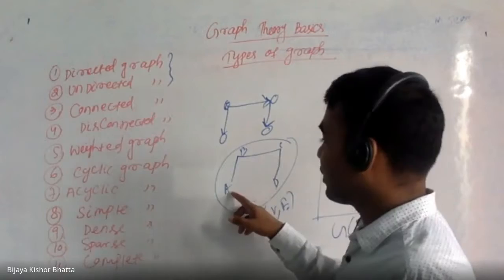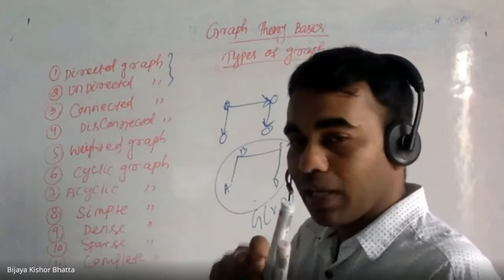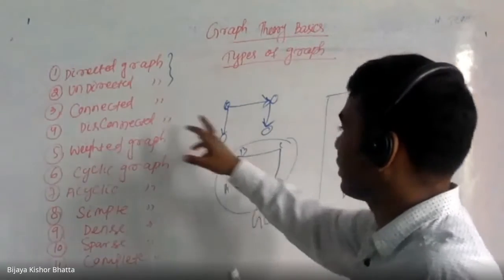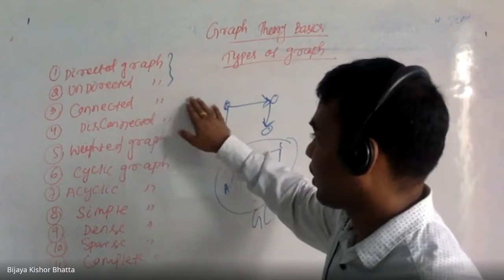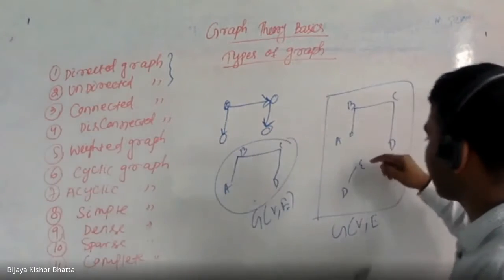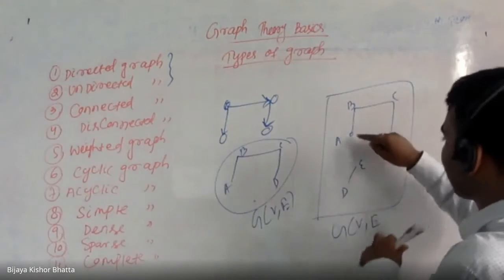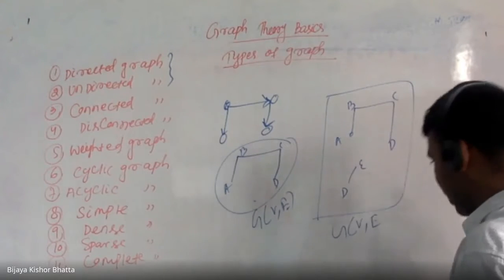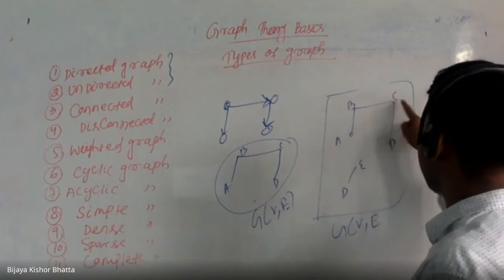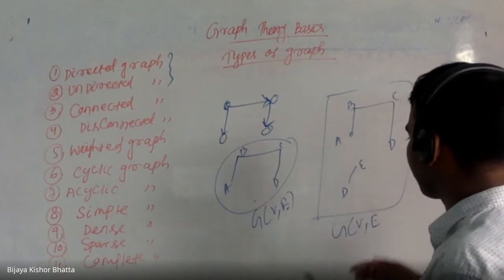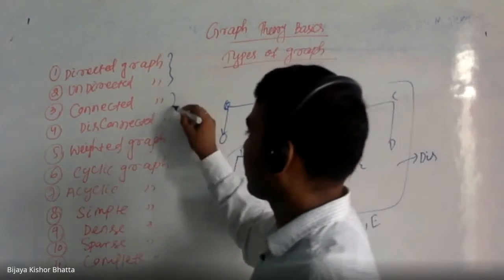Connected means every vertex — there exists a path from every vertex to every vertex. That means if I start from one vertex, I can go to any other vertex. Disconnected means there exist some vertices where there does not exist any path. For example, you cannot go from A to E because there is no path — you can go A to B, B to C, C to D, but not A to E.